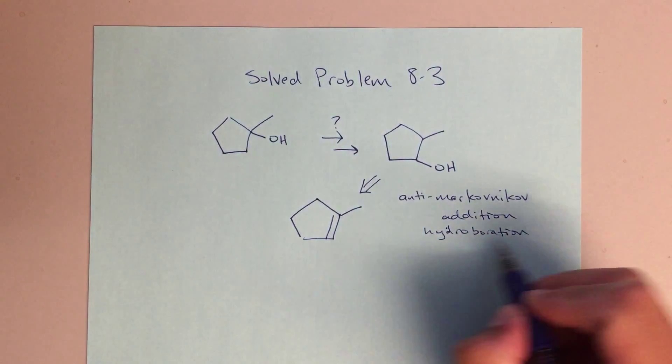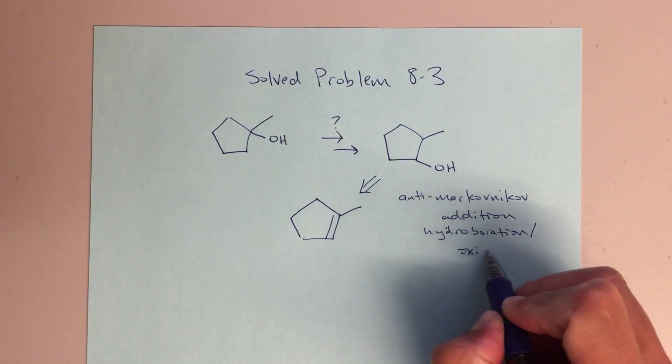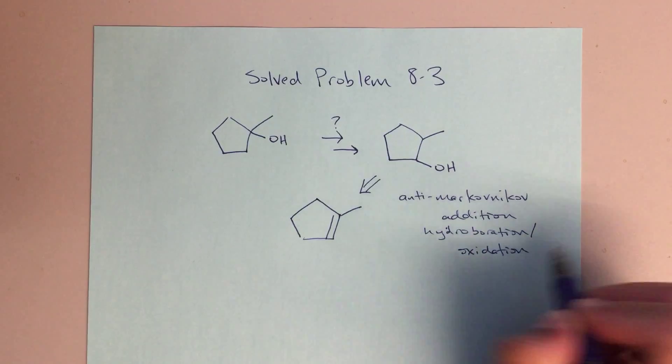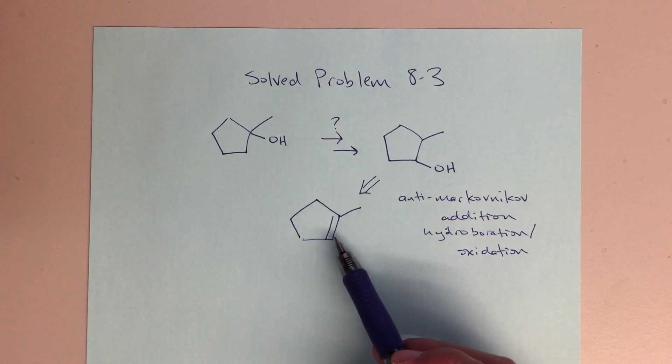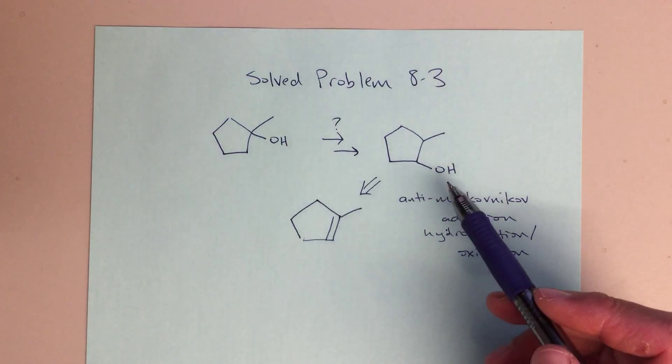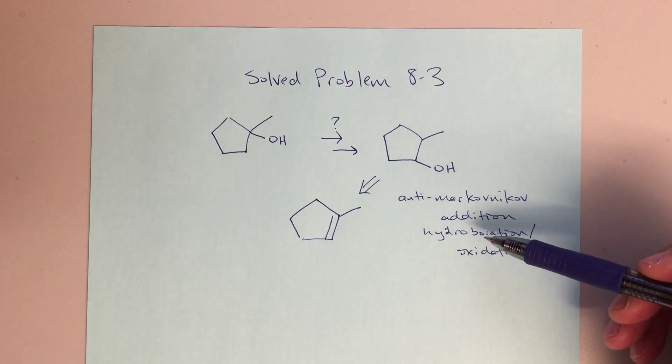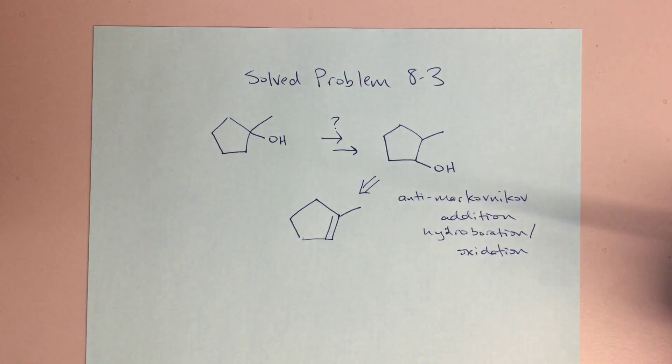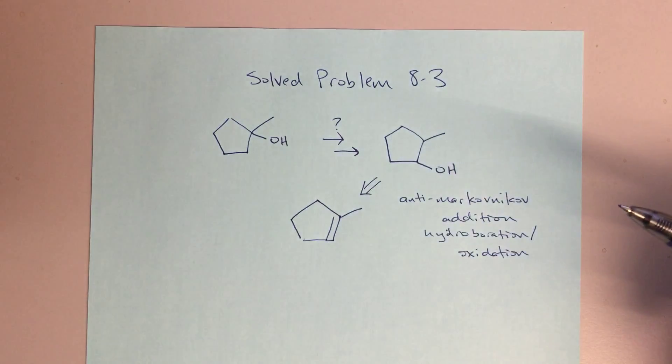Hydroboration oxidation is going to be the key to going from an alkene and doing an addition, turning an alkene into an alcohol and forming the anti-Markovnikov product. That's what we talked about in class today and that's going to be how we do this.